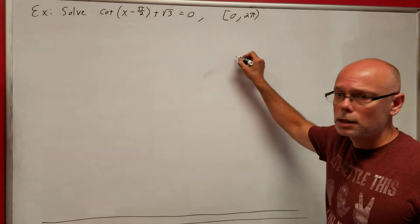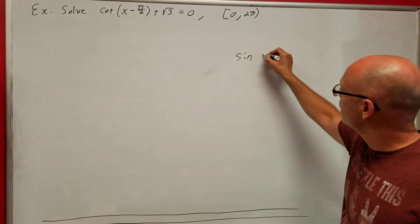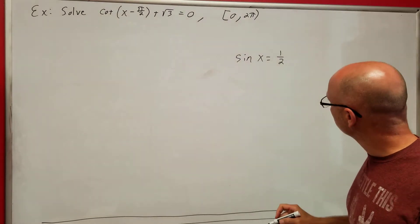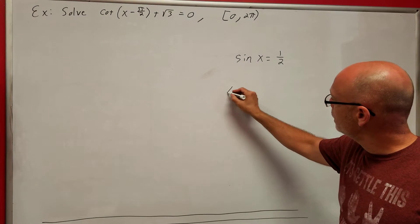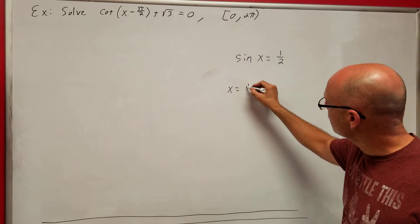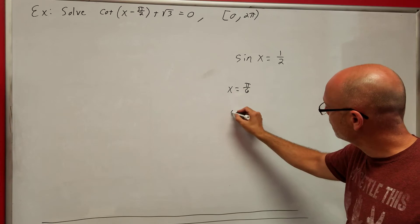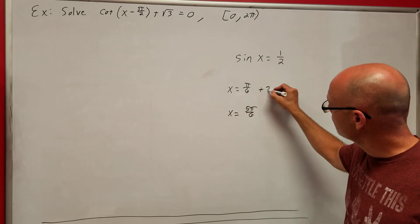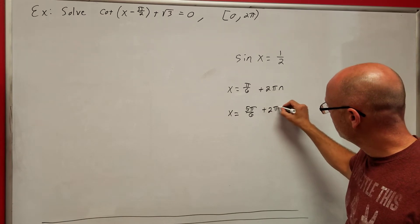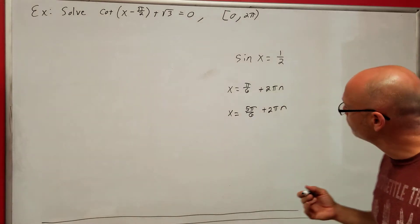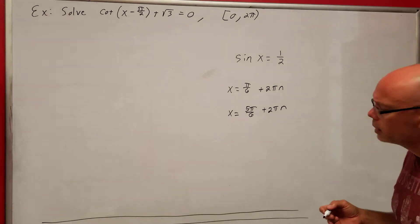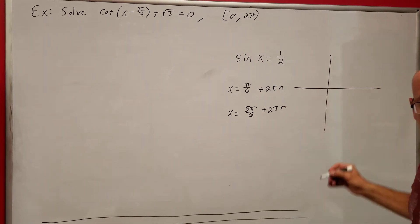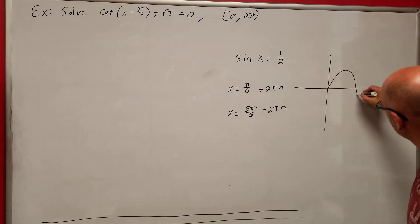Let's think about whatever we looked at: sine of x equals 1/2. Whenever we solved that, we said x is equal to π/6 and x is equal to 5π/6, plus 2πn, where n is an integer. Why did we put the plus 2πn? So we don't miss solutions — think about your graph of the sine function.